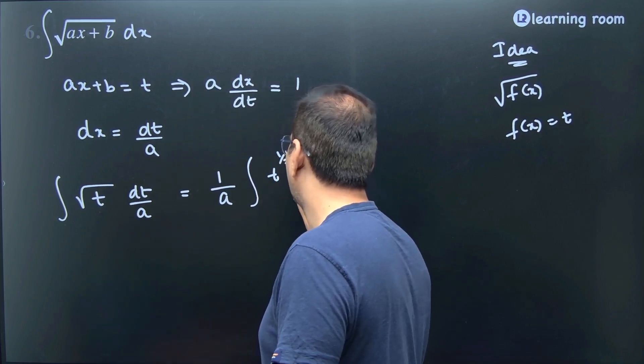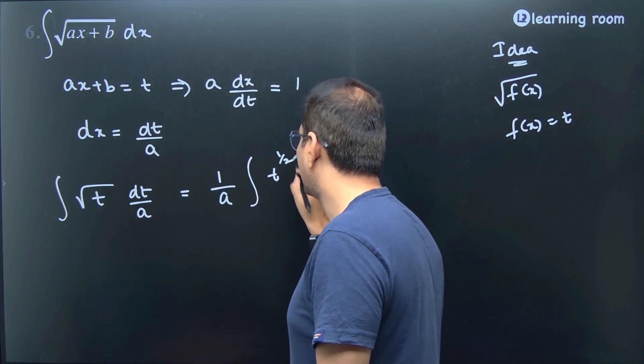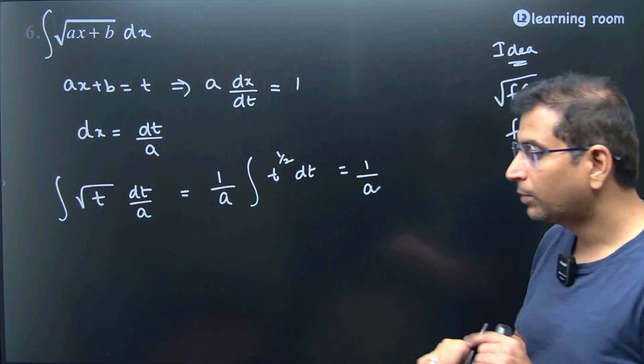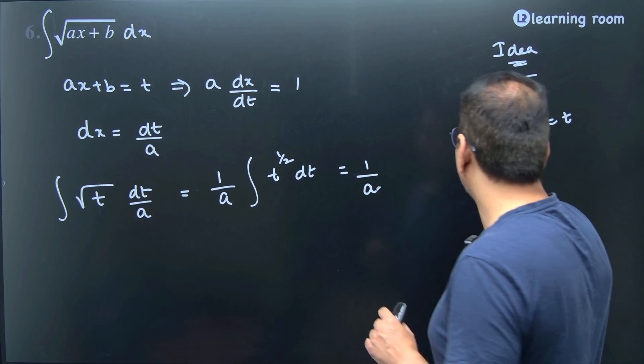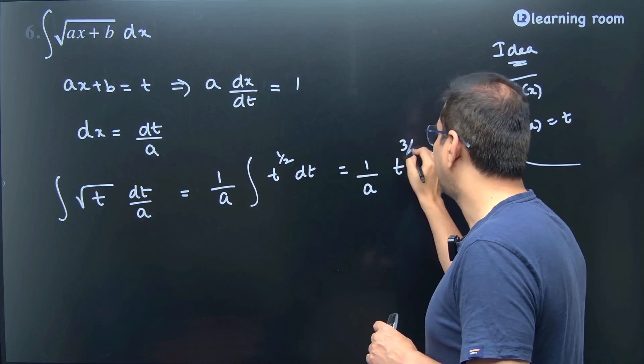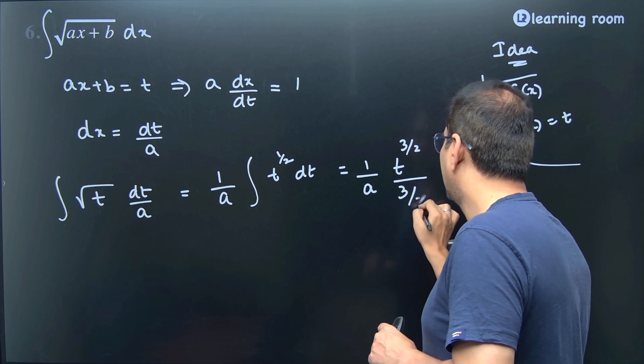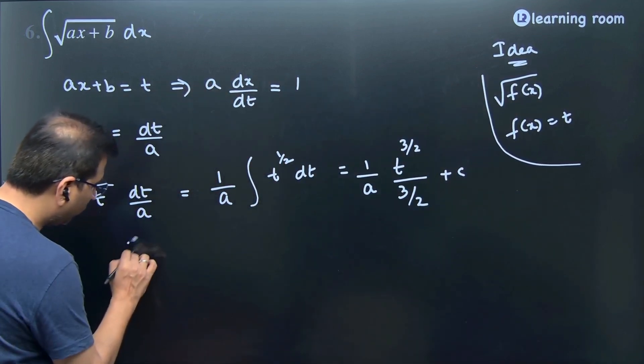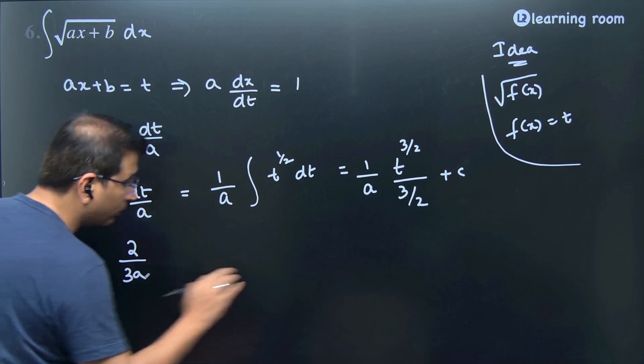So this will be 1 by a into, using the formula x power n plus 1 by n plus 1, we get t power half plus 1 is 3 by 2, the whole divided by 3 by 2, plus c.